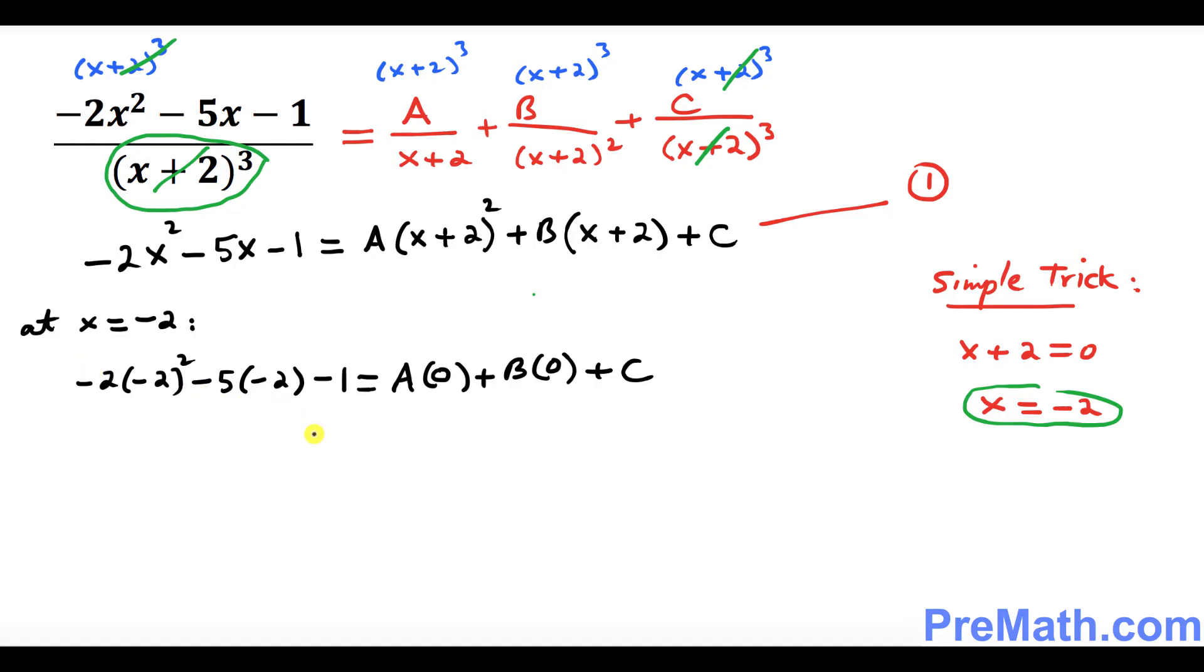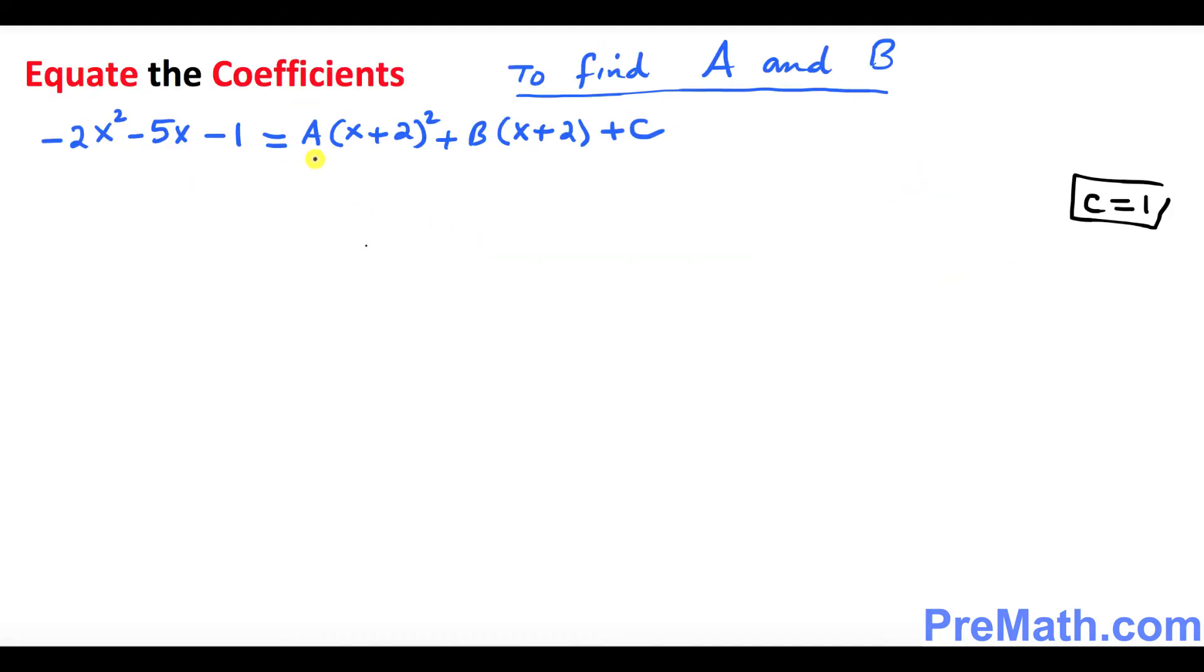So once you simplify this thing over here on the left hand side, that's going to give you 1 on this side. And this is 0, this is 0, so C turns out to be 1. So the next thing we want to find A and B, and we will be using this method, it is called equate the coefficients, or simply compare the coefficients on both sides. Let's see how things go.